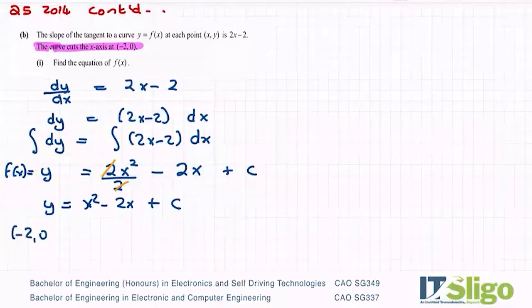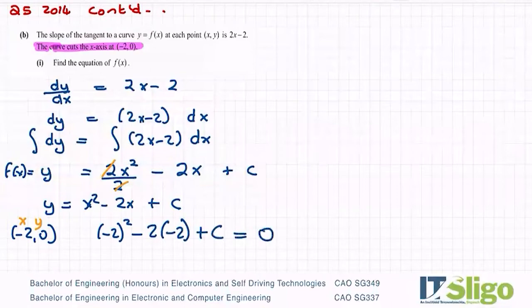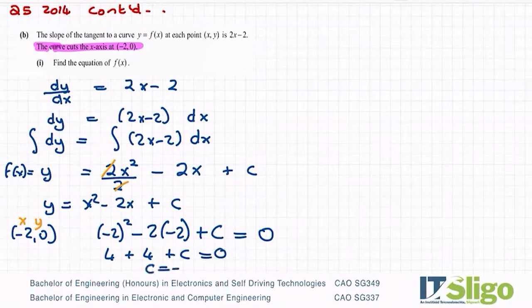In other words, we know this curve cuts the x axis at minus 2, 0. So I'm going to use that piece of information. So we know that satisfies our equation. In other words, that's my x, that's my y. So let's sub it in. So I'll have minus 2 squared minus 2 times minus 2 plus that constant of integration is equal to my y value. I just moved the y over to the end. So minus 2 squared is 4. Minus 2 by minus 2 is another 4. Plus c is equal to 0. Therefore, 4 and 4 is 8. Bring it over. C is equal to minus 8.